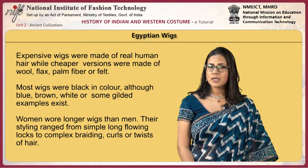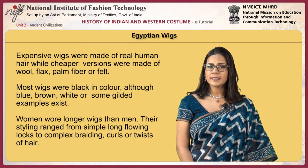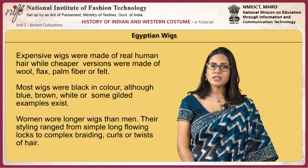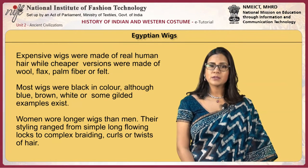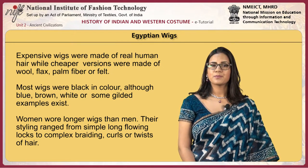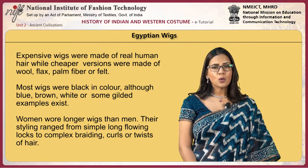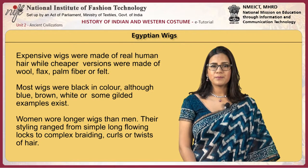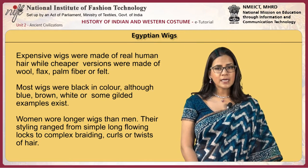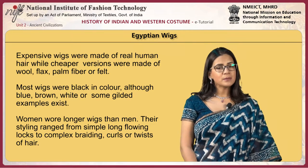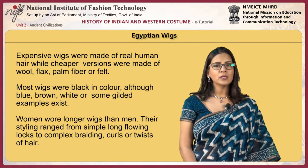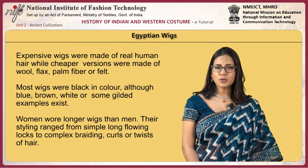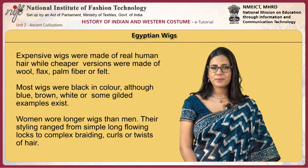Most wigs were black in color, although blue, brown, white or some gilded examples exist. Women wore longer wigs than men. Their styling ranged from simple long flowing locks to complex braiding, curls or twists of hair.